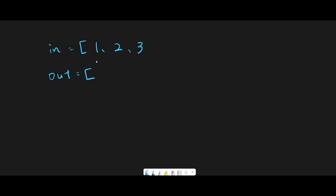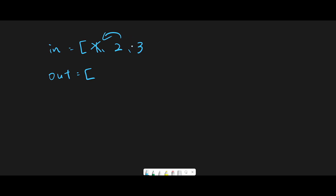In both operations, we should return one first. For peek, we can access index zero very easily. But for pop, we need to remove the front element, which means all data would have to shift forward — that's time-consuming. That's why we need the output stack.